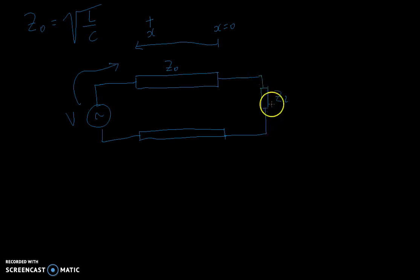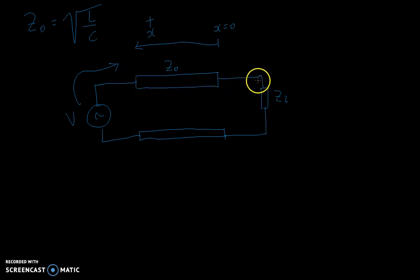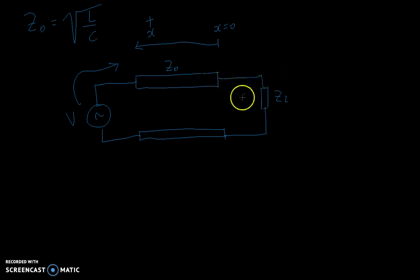If you leave this circuit open, the voltage will hit the end and it has nowhere else to go — it will reflect back and travel back to the driver, and that's not good. If you short the line, the exact same will happen, but the voltage will have its sign flipped. So if the signal is positive hitting the end, it will reflect as a negative pulse or signal flowing back.